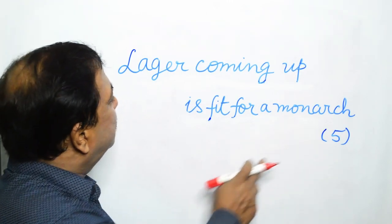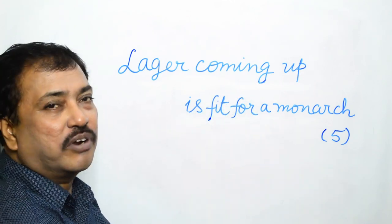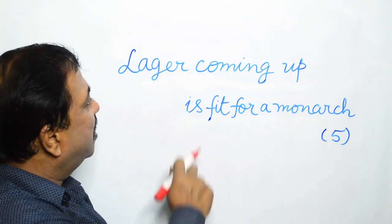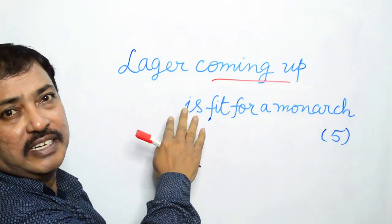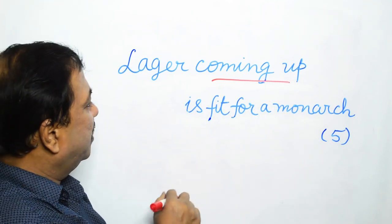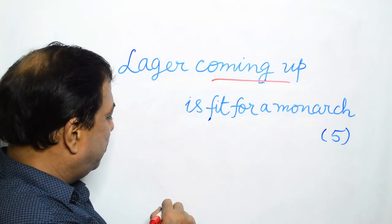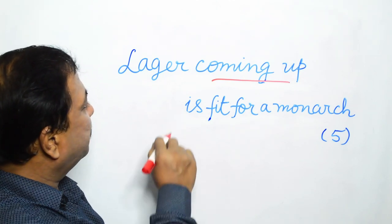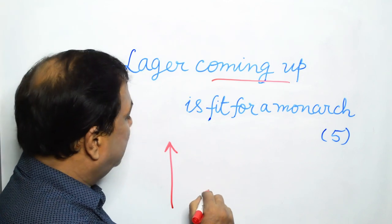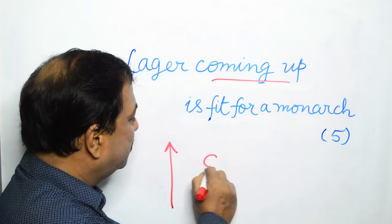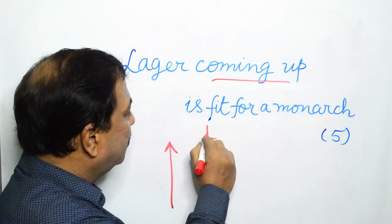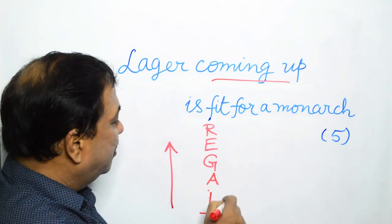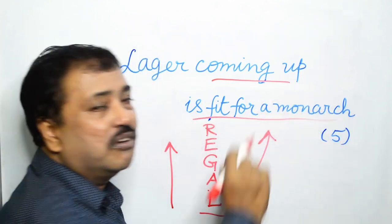Another five letter word: Lager coming up is fit for a monarch. Lager is an alcoholic drink in the form of a light beer. Obviously coming up indicates that it can appear as a down clue, and the answer has to be written from south to north, a vertical reversal. So let us write lager. What we get in the process? We get the word regal, and regal is fit for a monarch.